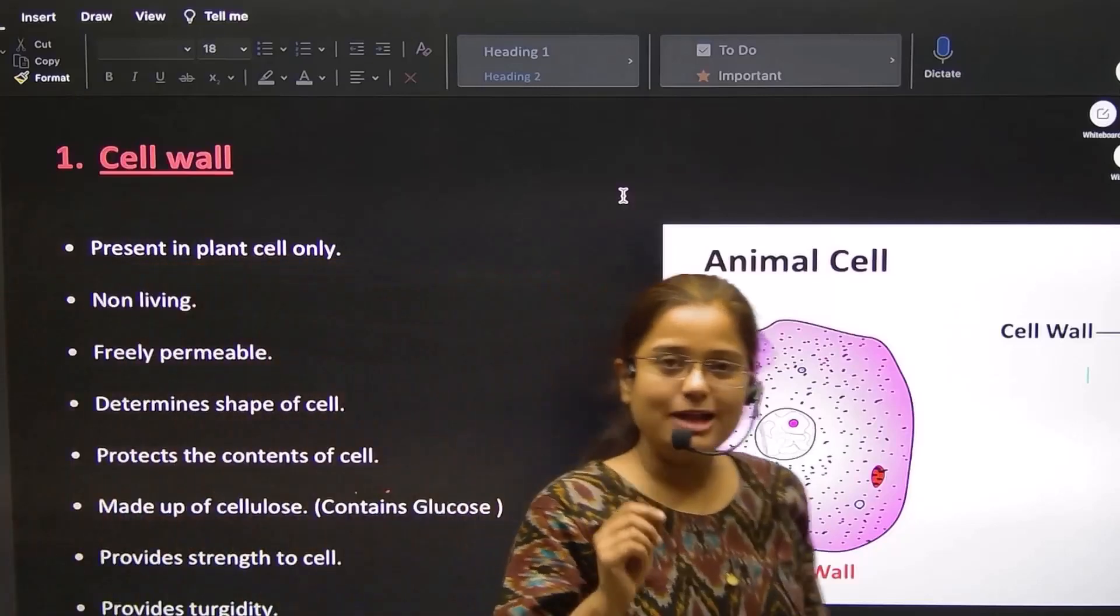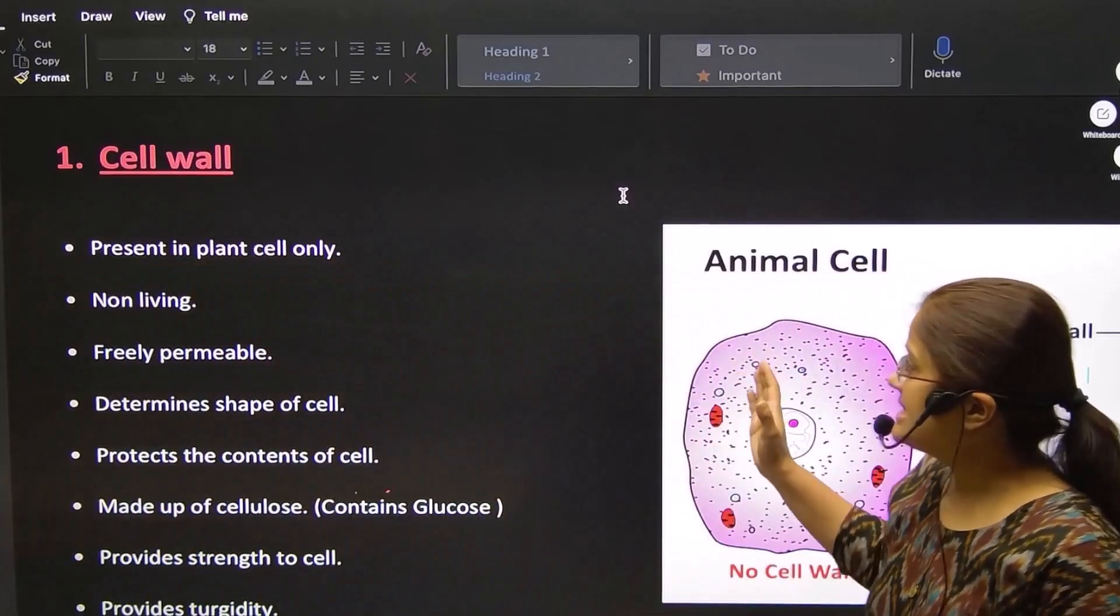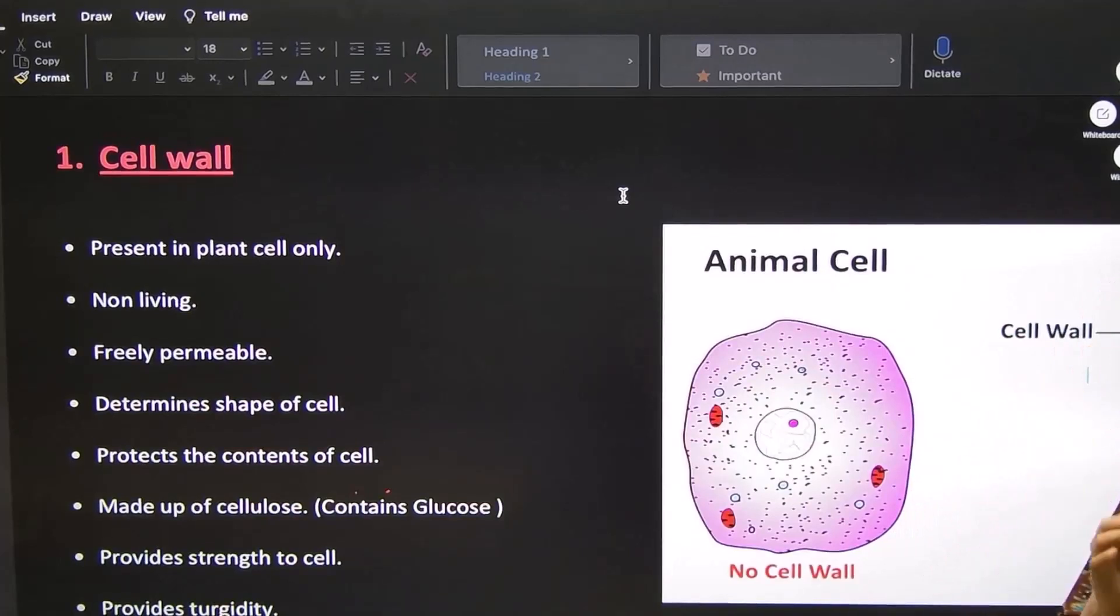So children, in today's video, we are going to know about cell walls. What is happening in the cell walls? First of all, you need to know that the cell walls are only in the plant cell.